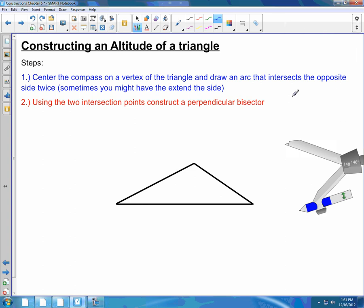In this video we're going to construct an altitude of a triangle. The first step: center the compass on a vertex of the triangle, draw an arc that intersects the opposite side twice. Note that sometimes you might have to extend the length of the side, especially for cases like obtuse triangles.